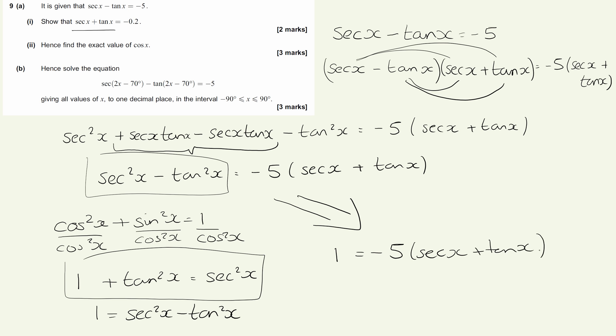Now because this is only two marks, a lot of students are going to think that it should be really easy. But I would suggest that actually the two marks reflects how difficult it is and you're not getting overly penalized if you don't get there. So from this stage, we're just dividing both sides by minus 5, which gives me minus 1 fifth is equal to sec x plus tan x. And that's what we've been asked to show. Minus 1 fifth is the same as minus 0.2.